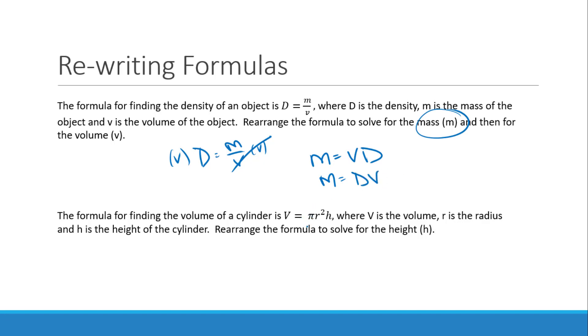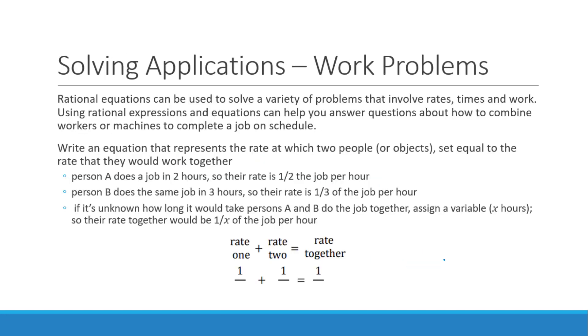This is the formula for finding the volume of a cylinder, and so it wants you to rearrange the formula to solve for the height. Now, whereas the other one was division, this one is all multiplication. So to get H by itself, we need to divide by whatever H is being multiplied. So that means H is equal to V divided by pi times R squared.